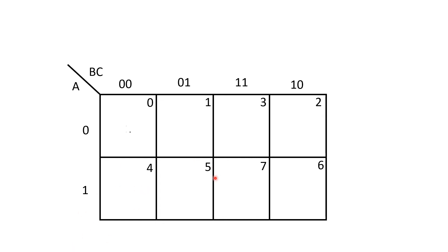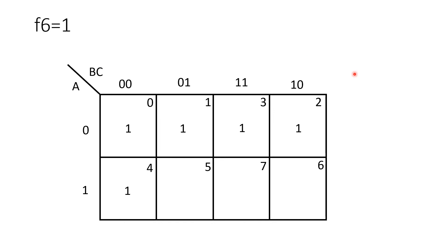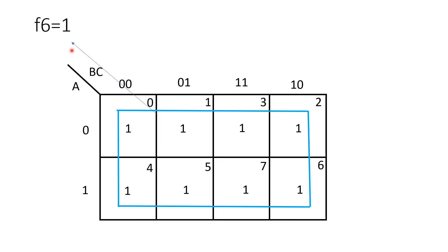In this case, placing ones in cells 0, 1, 2, and 3 — all four cells adjacent — forms a group of four. Reading it: this belongs to the first row (Ā), and all column bits change, so they are discarded. This group is called Ā, so F5 = Ā. In the final case, all eight cells are filled with ones, forming a group of eight, giving F6 = 1.